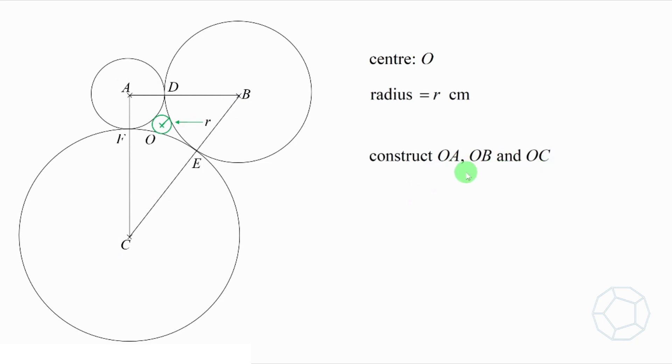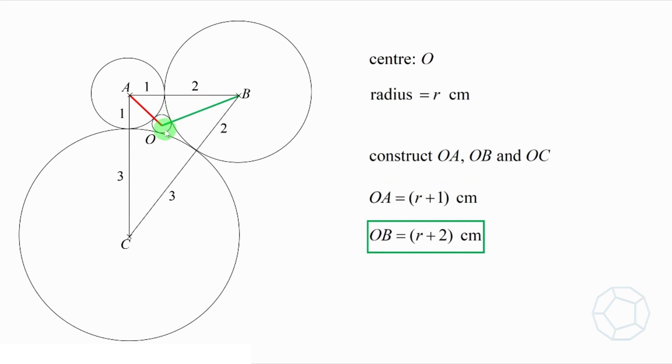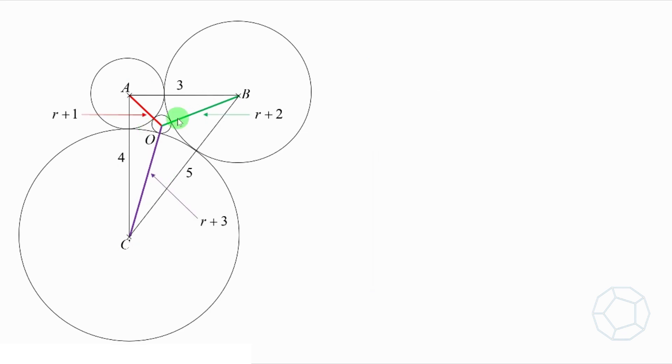We can get their lengths in terms of R as well. Let's calculate them. Refer to the figure, the red side OA is equal to R plus 1cm, the green side OB is equal to R plus 2cm, and the purple side OC is equal to R plus 3cm. Now, we have all the lengths in the figure. How do we move on?